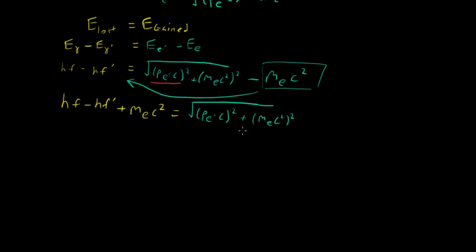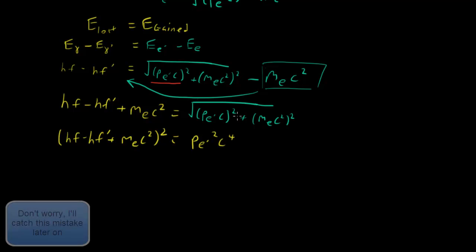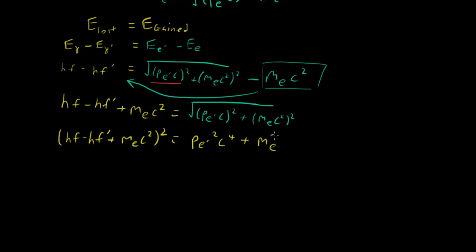Now, to isolate this variable again, we need to square both sides. And let's do it right away. (hf - hf' + m_e c²)² = (p_e')² c⁴ plus (m_e c)⁴ because I hate writing brackets. So basically what I did was I took out the brackets and squared both variables.